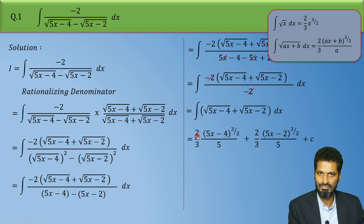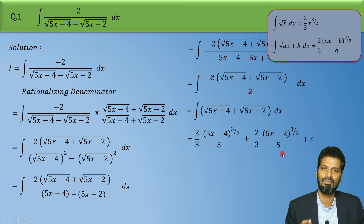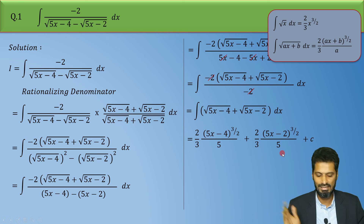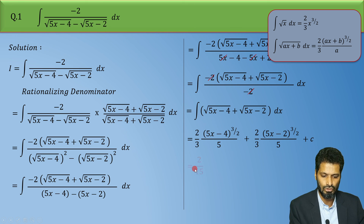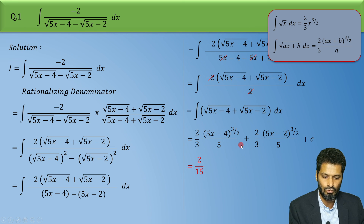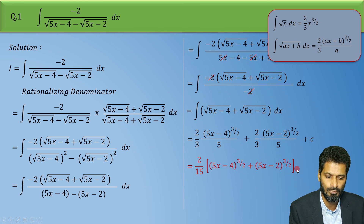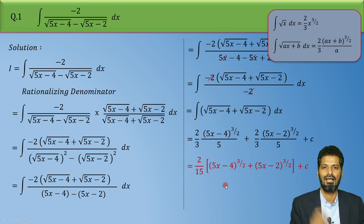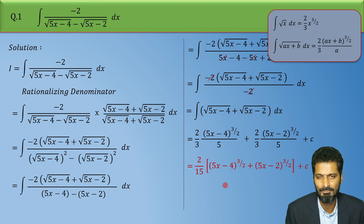In the final step, 2/3 times 1/5 gives 2/15 for both terms, so we can take 2/15 as common outside. The final answer is: (2/15) times [(5x minus 4) raised to 3/2 plus (5x minus 2) raised to 3/2] plus C. I hope this is clear to everyone — see you in the next video.